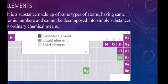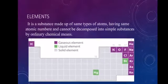A few elements exist as gases, for example nitrogen, oxygen, chlorine, and hydrogen. On the basis of their properties, elements are divided into metals, non-metals, and metalloids.